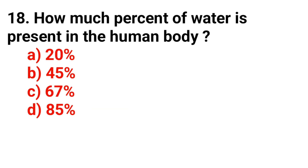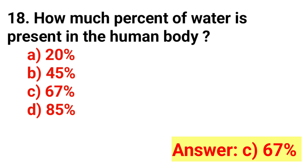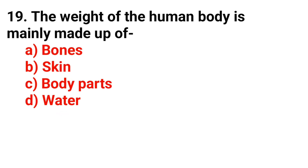Question number 18. How much percent of water is present in the human body? The answer is Option D: 67%.